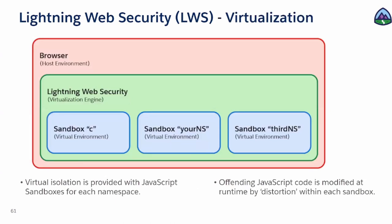Web security is a feature of the browser because any browser that supports the web component specification is going to support web security. You can have different sandbox components running in the same browser wrapped in web security. Virtual isolation is provided, and this way, if code goes into another JavaScript code and changes it, generating an error because of that change, that is going to be treated as a distortion.